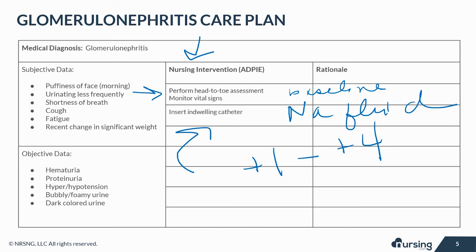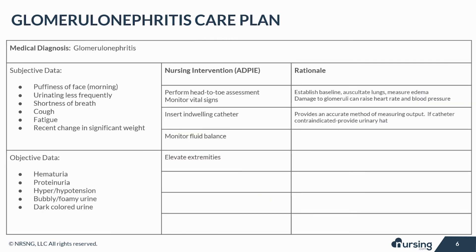Insert an indwelling catheter as necessary, as this will provide a more accurate method of measuring output. If a catheter is contraindicated, be sure to provide a urinary hat for the toilet to measure urine. It is critical to monitor fluid balance in these patients. Measure for decreased output — less than 400 mLs in a 24-hour period — which may be evident by dependent edema.